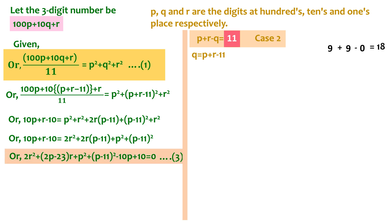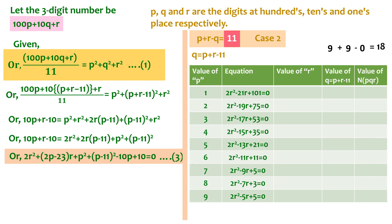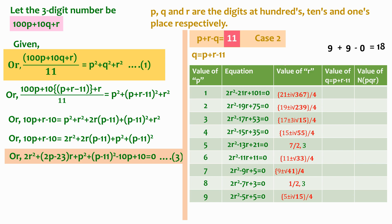Once again, we substitute p = 1, 2, 3, 4, 5, 6, 7, 8, and 9 and get the following values of r. We can see that we do not get a proper value of r for any value of p except for p = 5 and p = 8. So none of the other values of p have the possibility of giving an appropriate q and the required n.